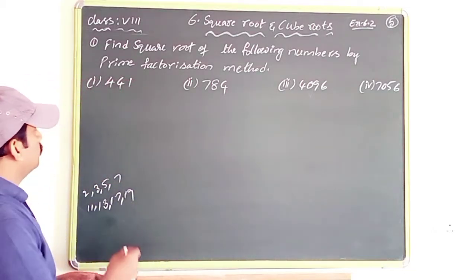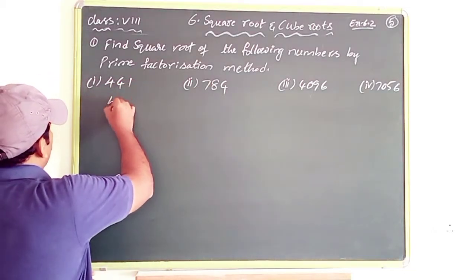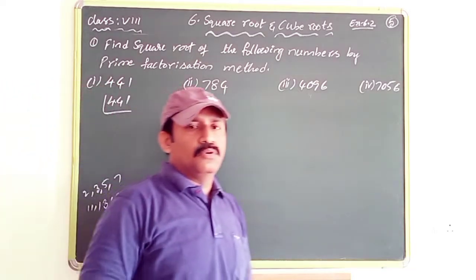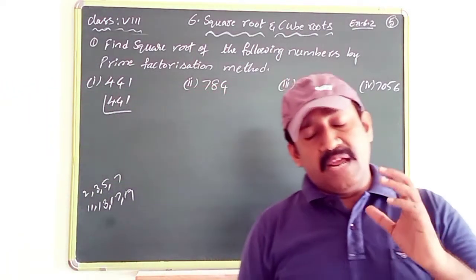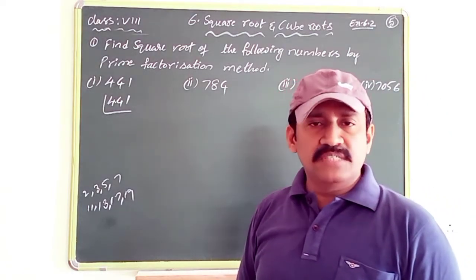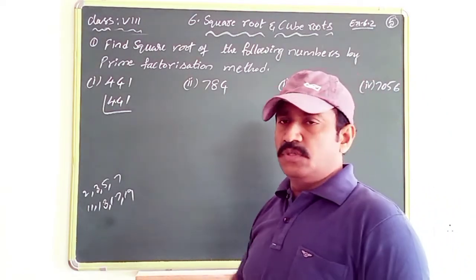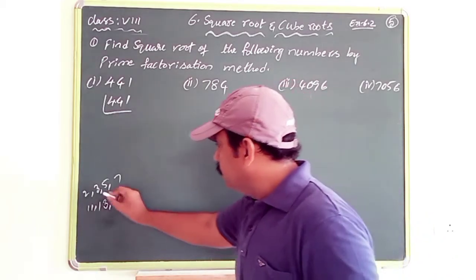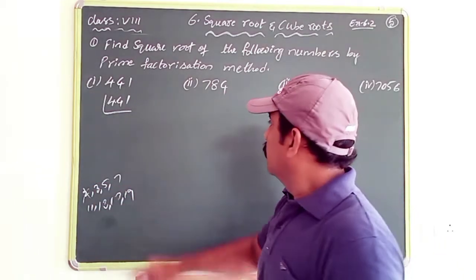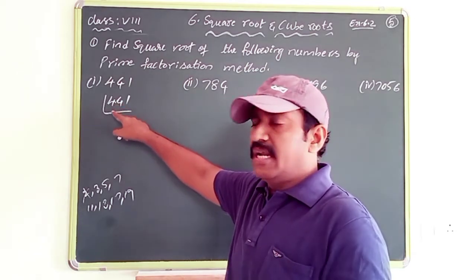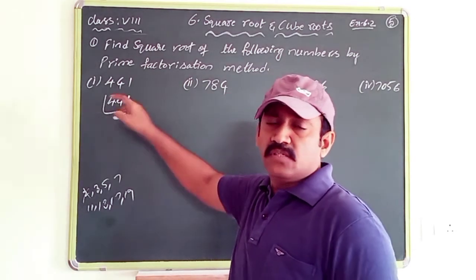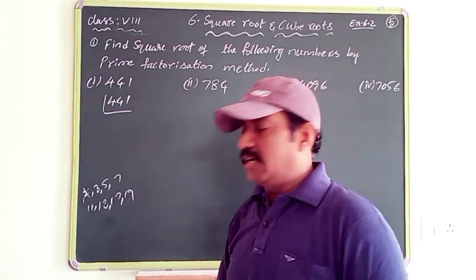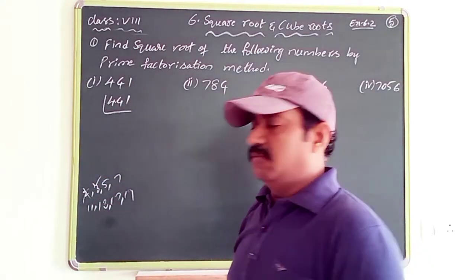Now let's solve: find the square root of 441. To solve this, you must know prime numbers and divisibility rules. The last digit of 441 is 1, so it is not divisible by 2. Next, add the digits: 4+4+1 = 9. Since 9 is a multiple of 3, 441 is divisible by 3.